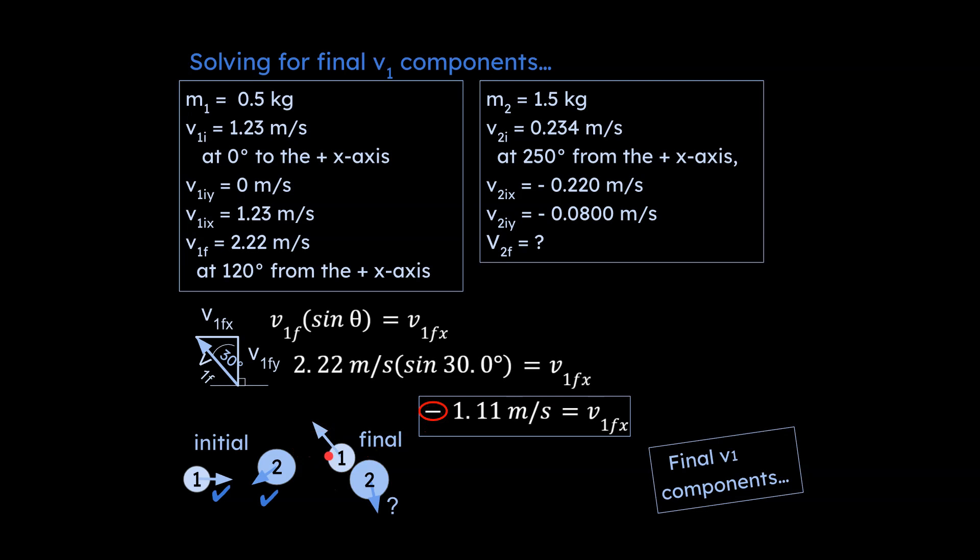So this one right here, notice that if we took that vector and broke it into components, this x component of this final vector for one is going to be in the negative direction. You have to remember to make these things negative or else you're going to get the problem wrong.